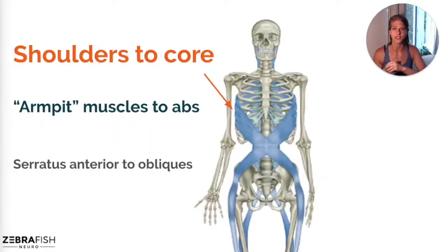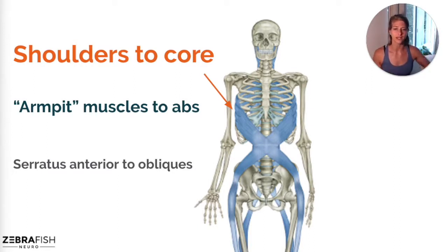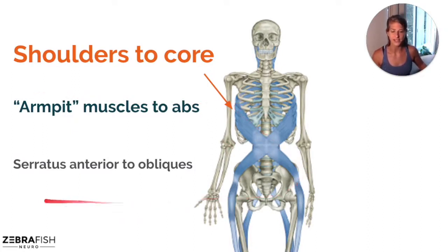This one is called the spiral line. Through my experience with SCI recovery, it best leverages the shoulders to help access the trunk. The spiral line wraps right underneath the armpit and then crosses over into your obliques. Another way I like to describe this is 'armpit to abs.' The more anatomical technical term is your serratus anterior to your oblique abdominals.